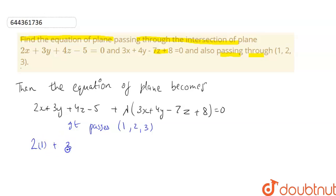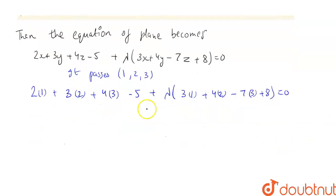1 plus 3 into 2 plus 4 into 3 minus 5 plus lambda 3 into 1 plus 4 into 2 minus 7 into 3 plus 8 is equals to 0. Now we will find the value of lambda from here.